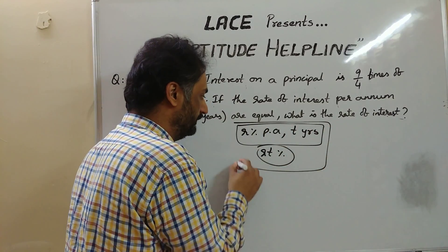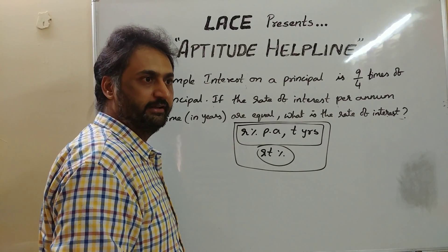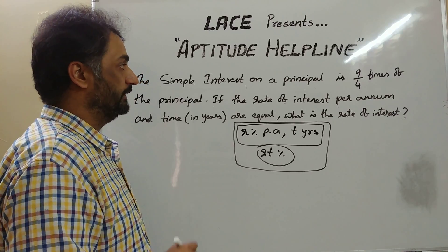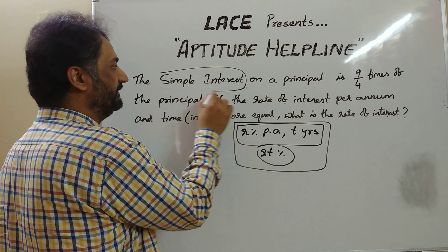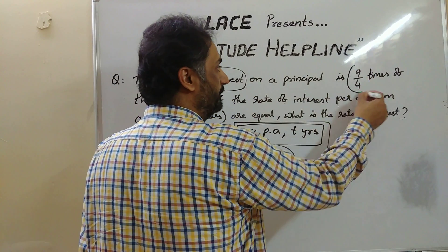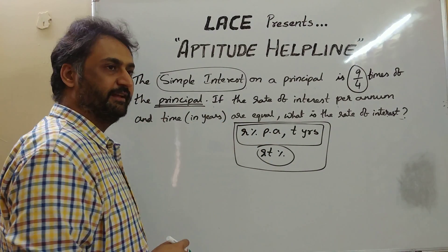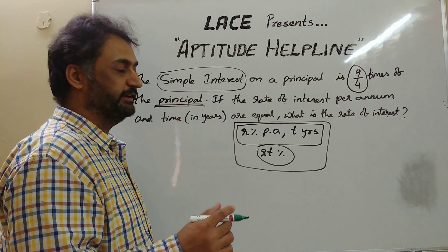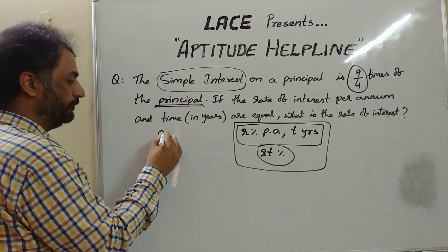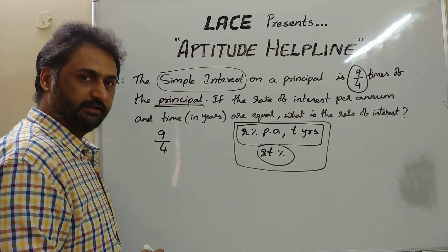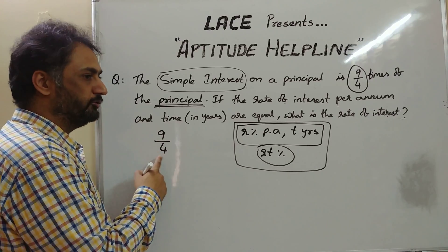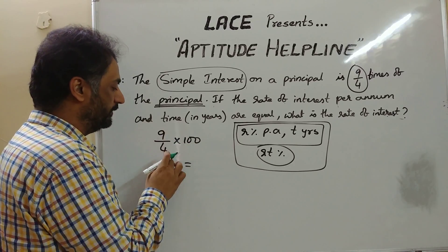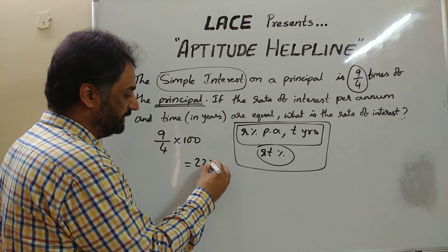Using this, let us understand the question in the easiest way. The question gives us two hints. The first hint is that the simple interest — the extra amount being paid — is 9/4 times the principal. In simple interest questions, we understand everything in percentages, so 9/4 converted to a percentage by multiplying by 100 gives us 225%.